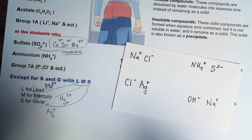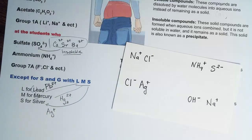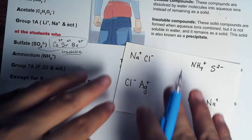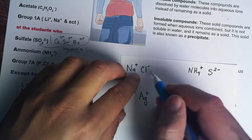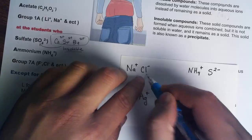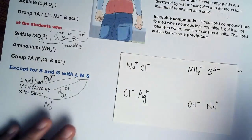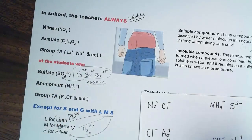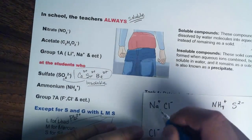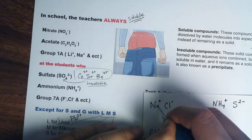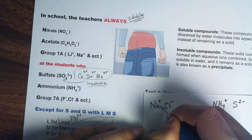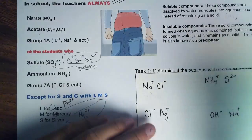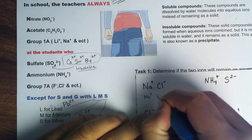We have two separate solutions each containing two separate ions, and we mix them together. Based on the solubility rules, anything with Group 1A will remain soluble — therefore they will not form a solid and will remain as aqueous ions.